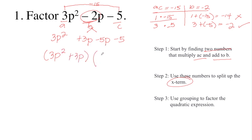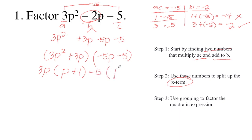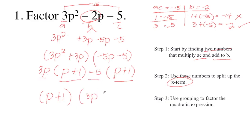Group the third and fourth terms: negative 5P minus 5. Find the GCF of 3P squared plus 3P, which is 3P. 3P squared divided by 3P is P, and 3P divided by 3P is positive 1. The GCF of negative 5P minus 5 is negative 5. Negative 5P divided by negative 5 is P, and negative 5 divided by negative 5 is positive 1. Since P plus 1 is common, factor that out, and the remaining terms are 3P and negative 5.